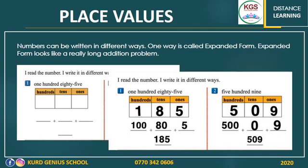Number two — we have 509. In the hundreds place we have five. The value of five is 500 because it's in the hundreds spot. What about the tens? We have no tens, so the value is zero. And the value of nine — since it's in the ones place, the value equals itself, and it's only nine. Therefore, write it as an addition problem: 500 plus 0 plus 9. If you add these numbers, you will get 509. You can see all of the values of each digit in the expanded form.